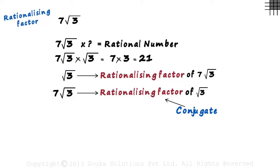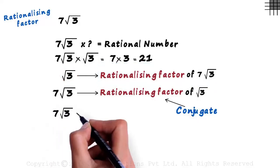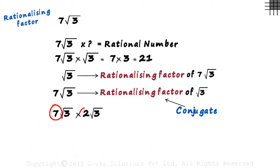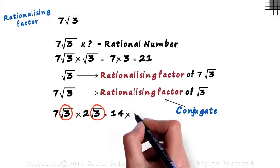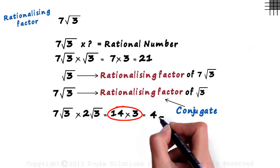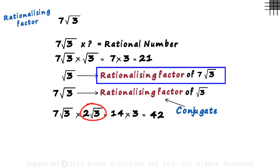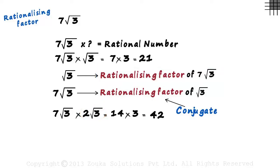Is the rationalizing factor of a number unique? Is root 3 the only rationalizing factor of 7 root 3? Let's try multiplying 7 root 3 with 2 root 3. 7 multiplied by 2 is 14, and root 3 multiplied by root 3 equals 3, giving us 14 multiplied by 3 which equals 42. Since 42 is a rational number, 2 root 3 is indeed a rationalizing factor of 7 root 3, which proves that a rationalizing factor is not unique.